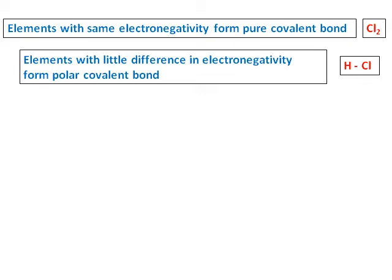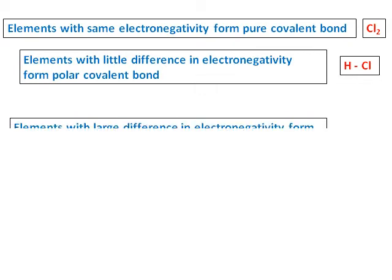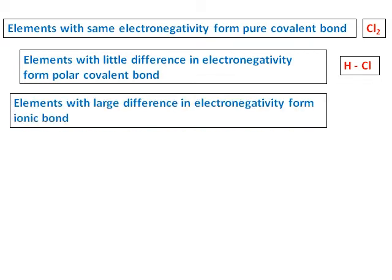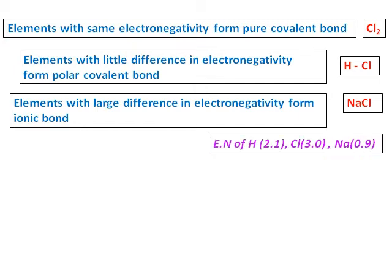As we saw before, Cl gets a partial negative charge and hydrogen gets a partial positive charge. However, if the elements have a very large difference in electronegativity, they form ionic bonds. For example, sodium and Cl: sodium has an electronegativity of 0.9 and Cl has 3.0 — a large difference. Hence all the electrons are taken by Cl, sodium gets nothing, and they don't share electrons. You get an ionic bond.